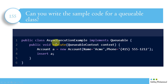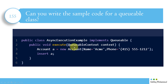Can you write a sample code for the Queueable class? Yes, it is very easy. You write a public class — for example, AsyncExecutionExample — which implements the Queueable interface. It has the execute method, which is mandatory, and it takes the parameter QueueableContext context as the variable. That is how we write a Queueable class.